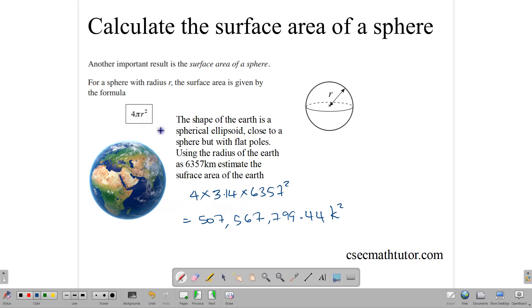4 × π × r². Now, let's see how we can use that in a CXE question.